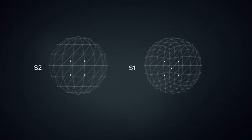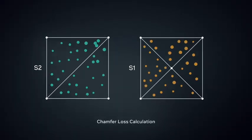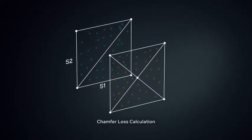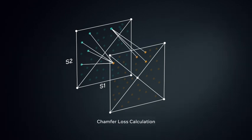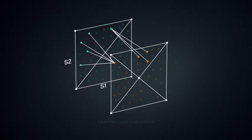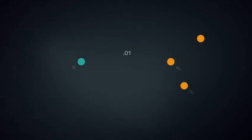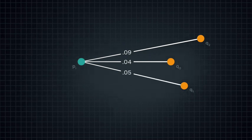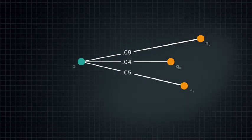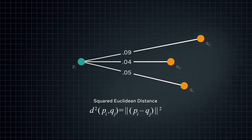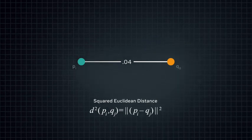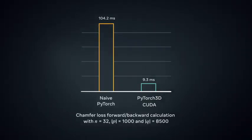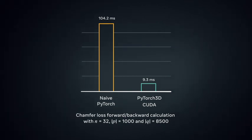calculating the chamfer loss between two meshes requires two intensive operations. First, we need to differentially sample a set of points from the surface of each mesh. And second, for each point, we need to find the closest neighboring points in the other point cloud. This can be a memory-intensive computation in PyTorch, as we need to calculate a pairwise distance matrix and then find the minimum value. In comparison, a fused CUDA kernel enables significant speedup and reduced memory usage.